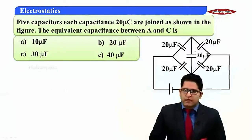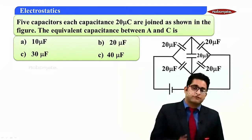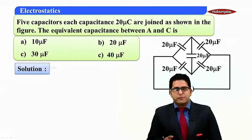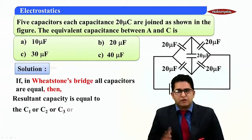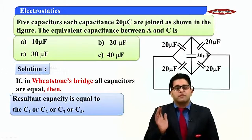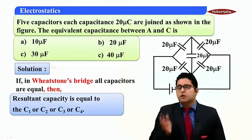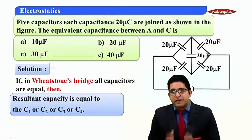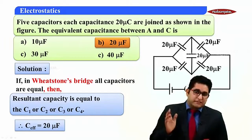We are provided with five capacitors and asked to find the effective capacity. As all capacitors are equal, C1 = C2 = C3 = C4, all having values of 20 microfarad. So the resultant capacity equals any one of them — 20 microfarad. Option B is correct.